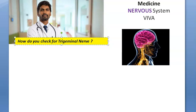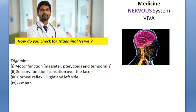How do you check for trigeminal nerve? The trigeminal nerve is the fifth cranial nerve. We can check its motor functions by checking the masseter, pterygoid, and temporalis. Then sensory function by sensation over the face, then corneal reflex, and jaw jerk can also be done.